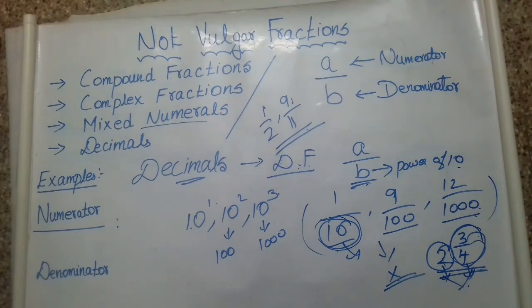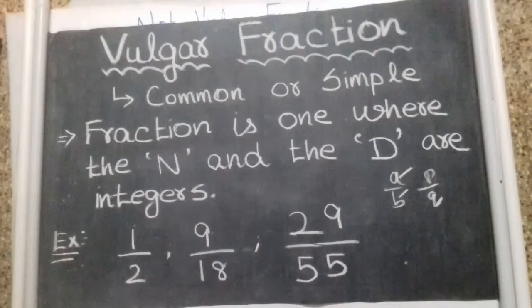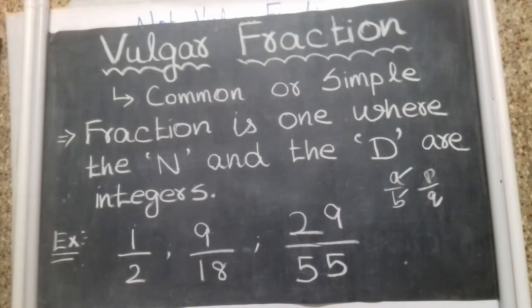So, the categories that are not a vulgar fraction are: compound fractions, complex fractions, mixed numerals, and decimals. A vulgar fraction is one where the numerator and denominator are integers. Thank you for watching this video.